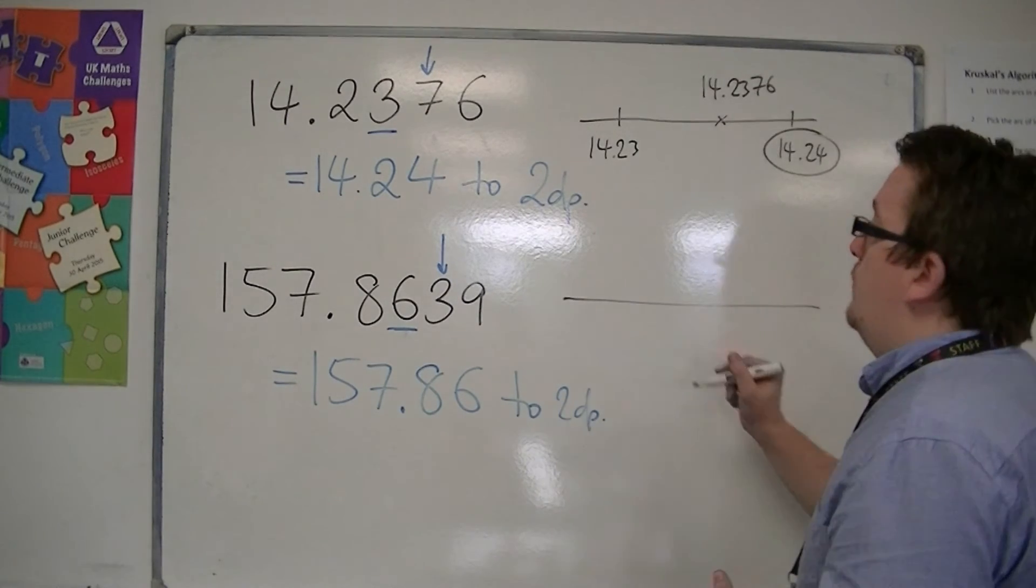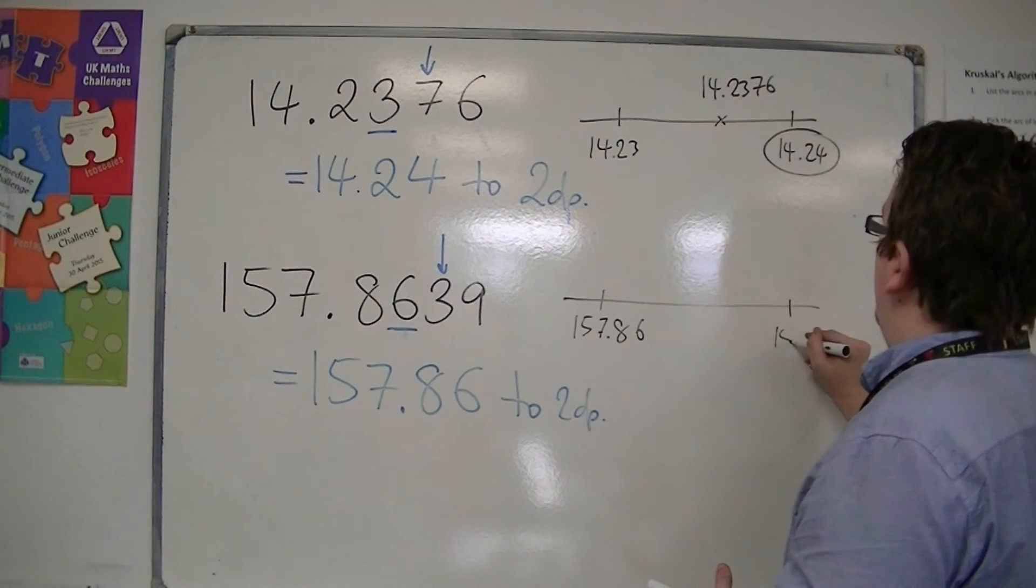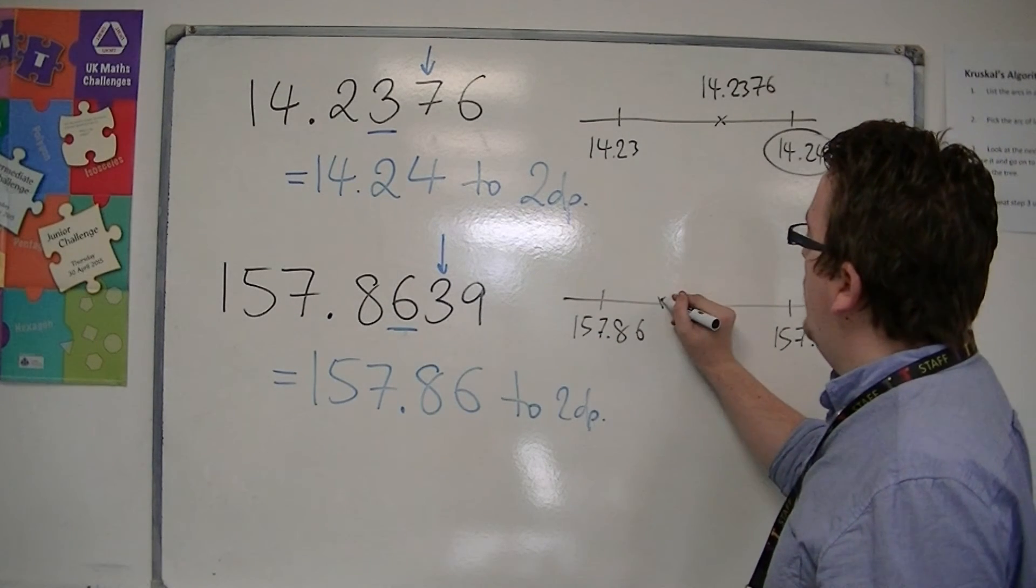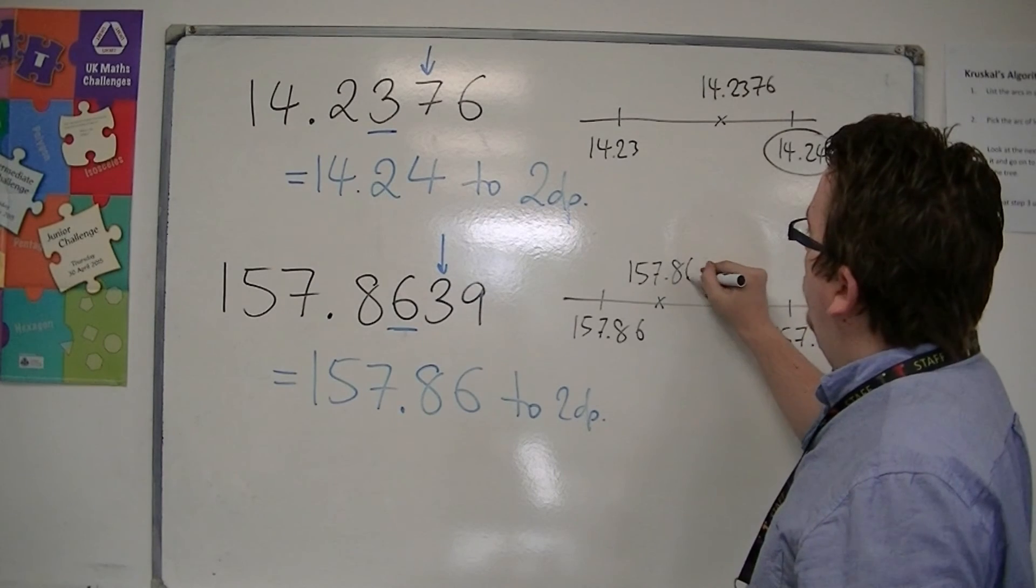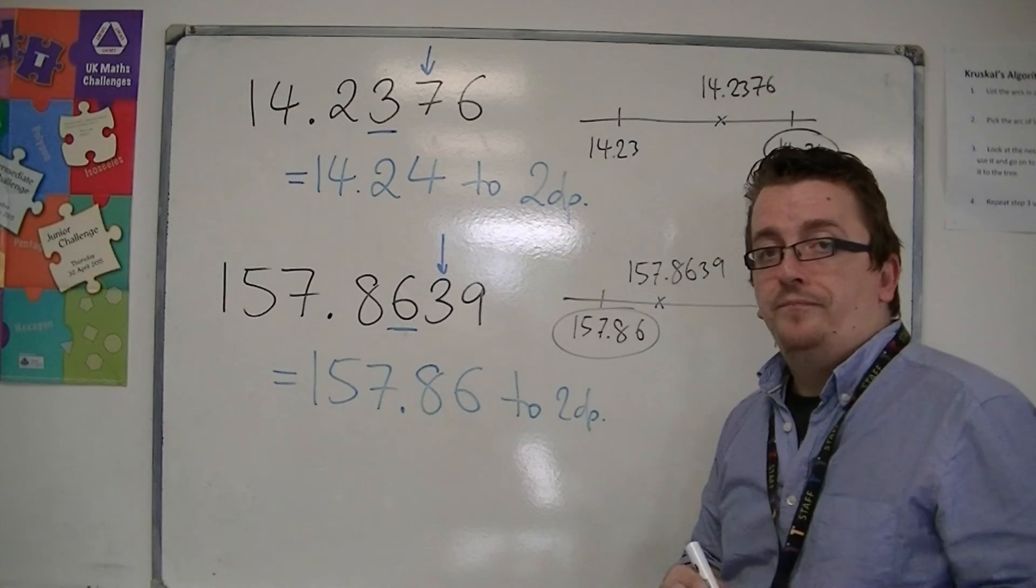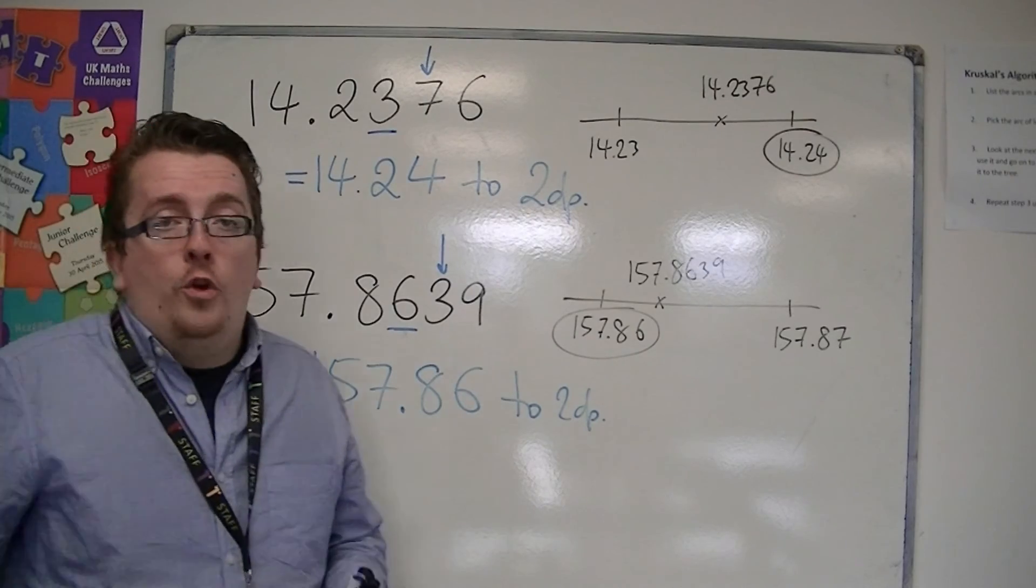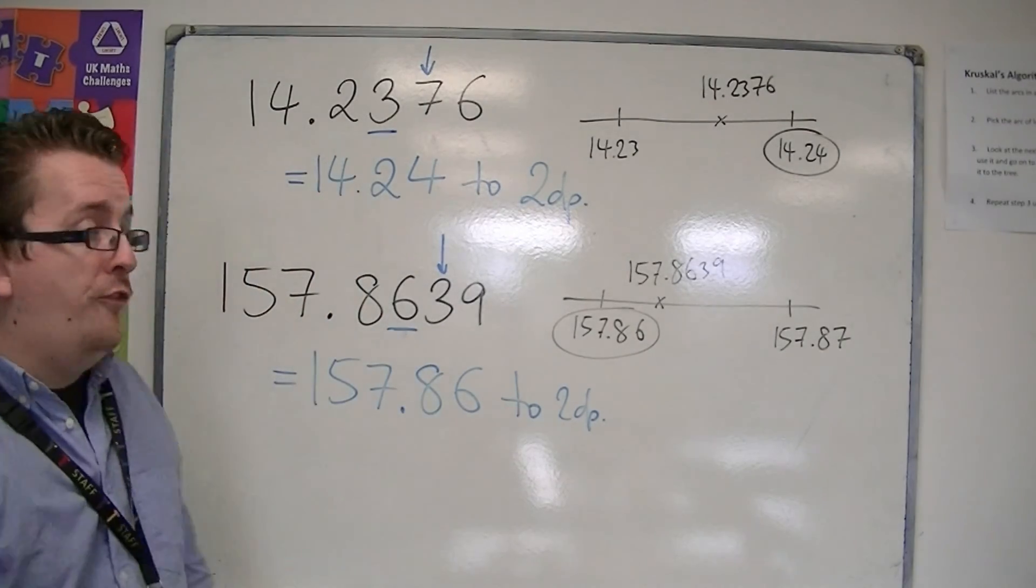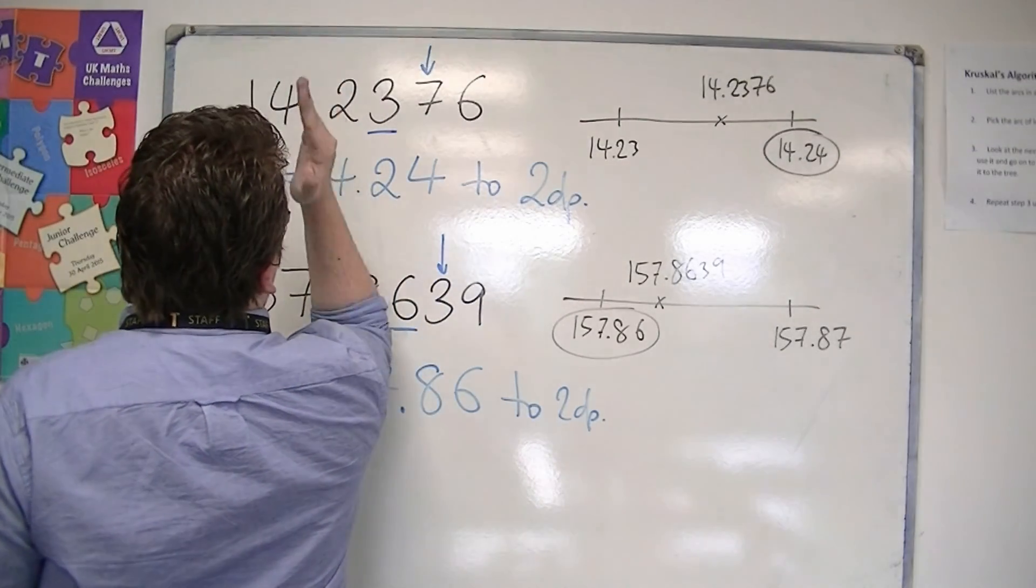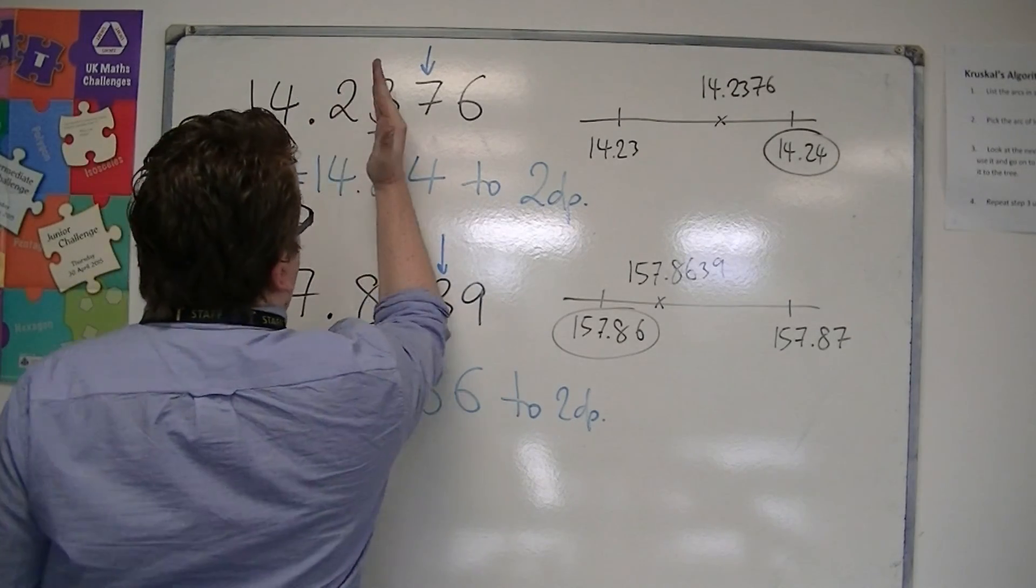And on our number line here, we've got 157.86 and 157.87. But 157.8639 is roughly about there. And so on a number line, it is very clear that that is the one that we're looking for. So in each case, as it is with one decimal place or two decimal places, or you can go to three decimal places or four, you're looking at, in the first case, for one decimal place, the first decimal place column. For two decimal places, you're looking at the second decimal place column. And then always the one to the right to decide whether you should round up or round down.